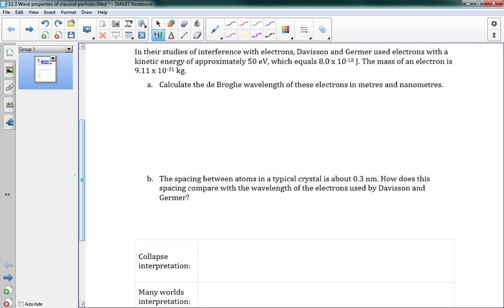Alright, now we're going to use our old-fashioned kinetic energy here, because we've got our kinetic energy of 50 electron volts, or we've got it in joules as well here. So, we're going to use old-fashioned kinetic energy. Ek is equal to one-half mv squared.